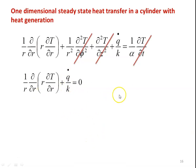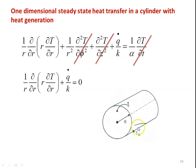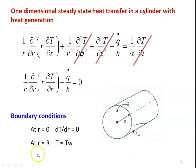Here, Q dot is the volumetric heat generation — the heat generation per unit volume. K is the thermal conductivity of the material. We consider a solid cylinder of outer radius R with uniform heat generation at the rate of Q dot, and T_W is the wall temperature. The boundary conditions are: at R equal to 0 (at the center), DT/DR equal to 0; and on the outer surface where R equals capital R, the temperature equals the wall temperature T_W.